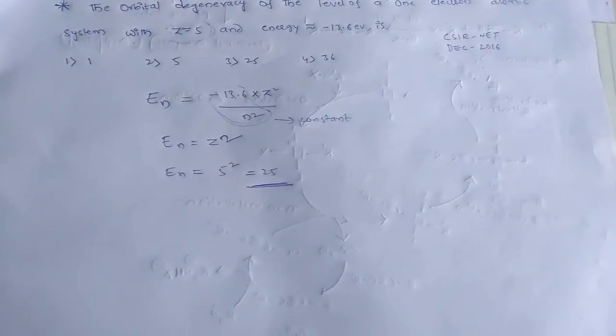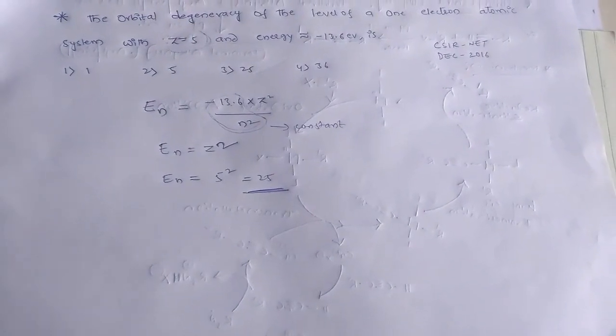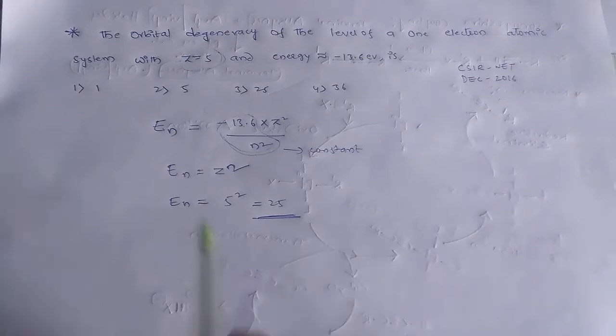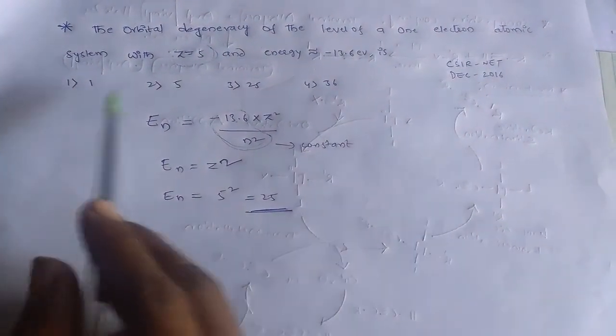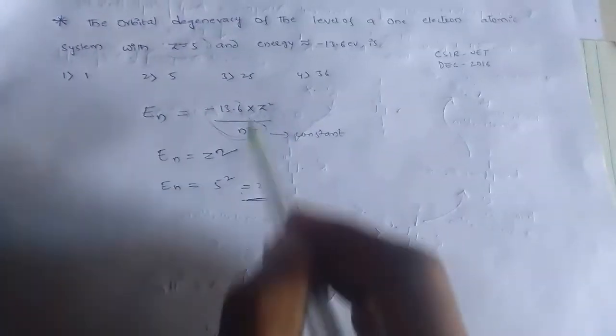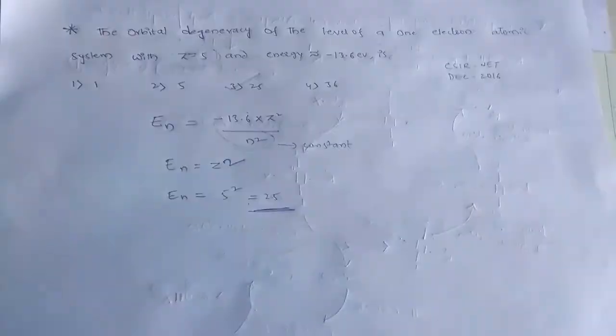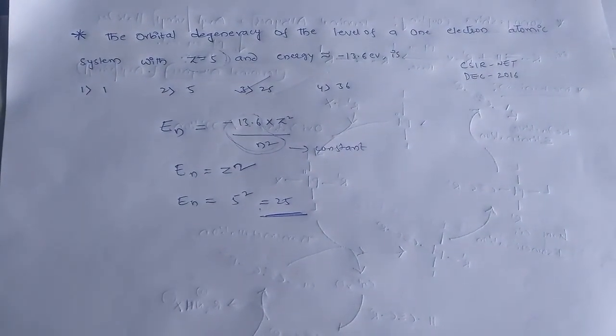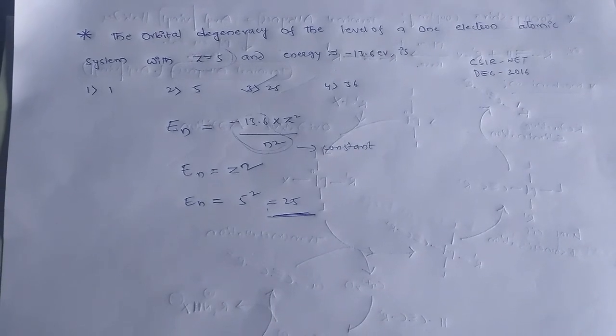So 25 is the orbital degeneracy of the level of a one electron atomic system of the given problem. So this is the simplest way. We have in this third option, the third option is the right one for the given problem. Okay. Thank you.